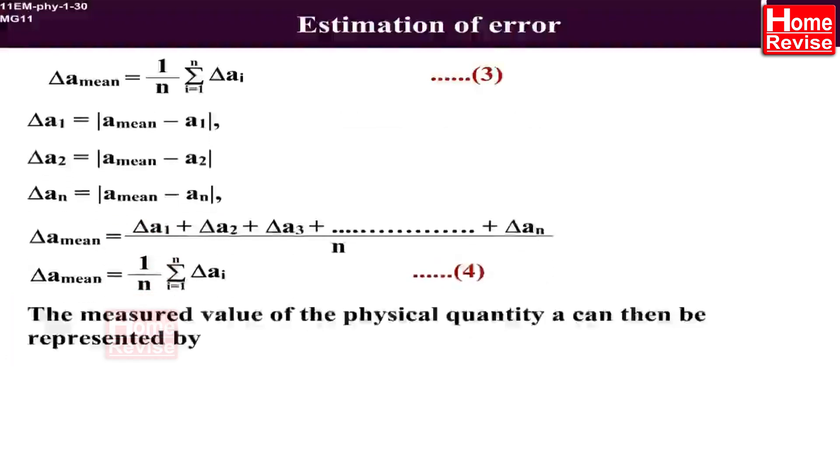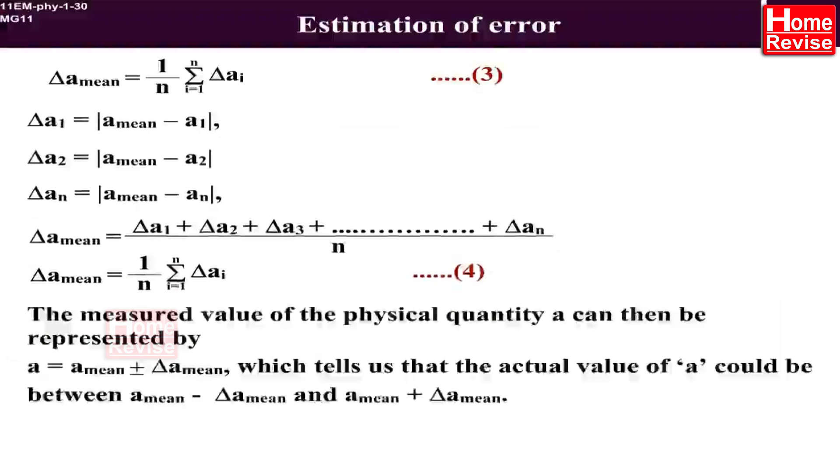The measured value of the physical quantity A can then be represented by A is equal to A_mean plus minus ΔA_mean, which tells us that the actual value of A could be between A_mean minus ΔA_mean